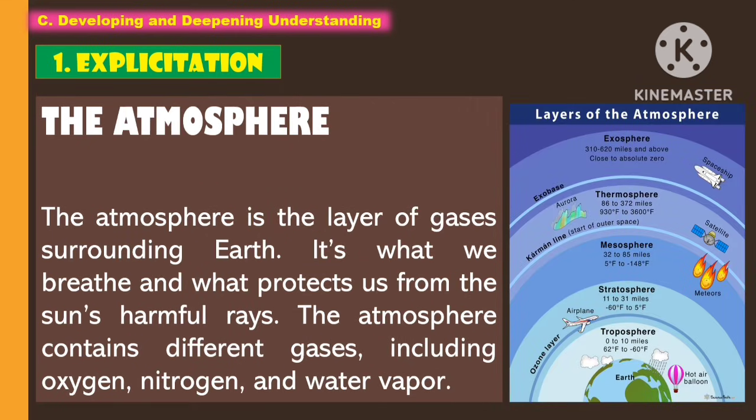Another earth system is the atmosphere. The atmosphere is the layer of gases surrounding the earth. It is what we breathe and what protects us from the sun's harmful rays. The atmosphere contains different gases, including oxygen, nitrogen, and water vapor.